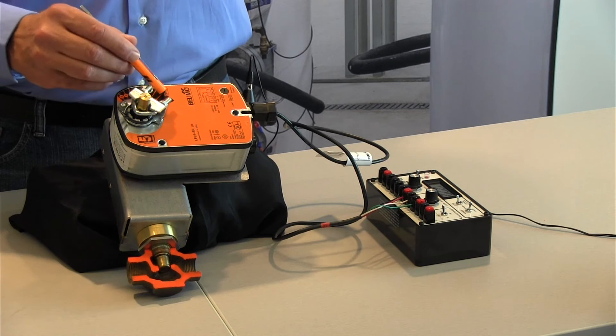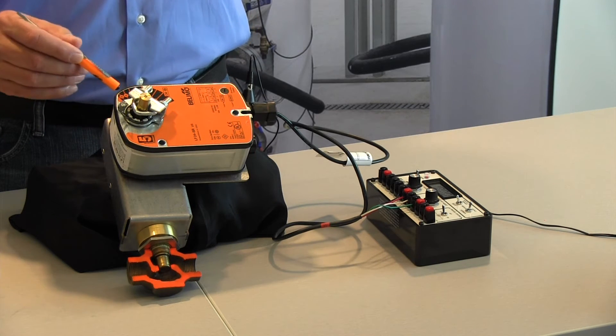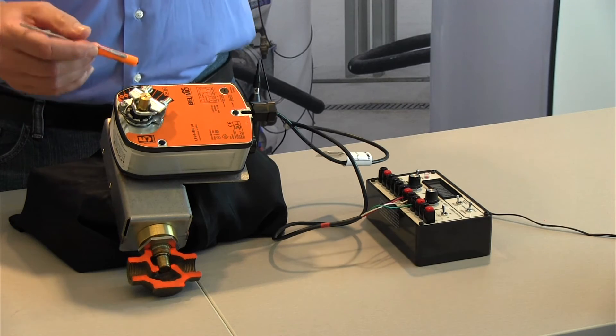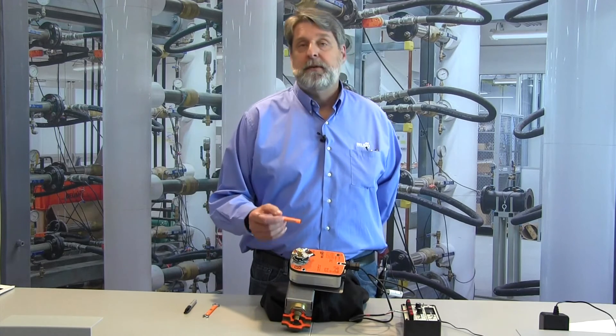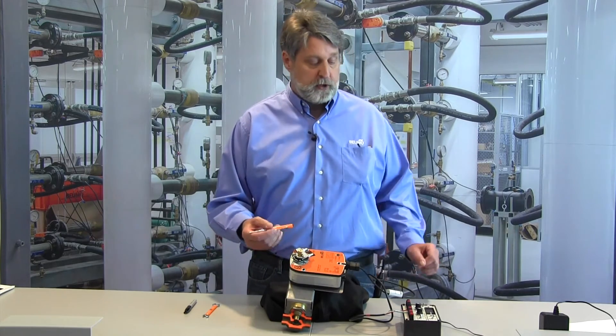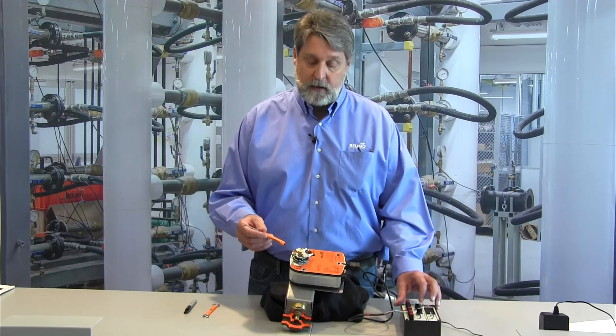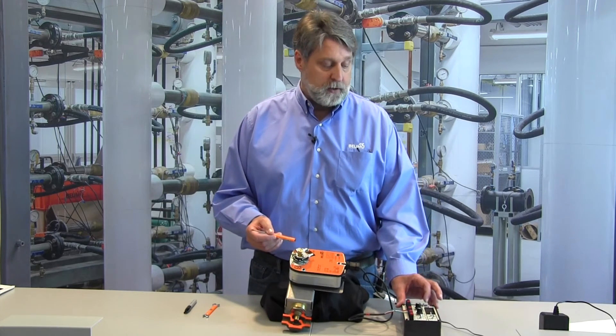We have a scale on the outside of the actuator and it's just for general reference. Because this is a spring return actuator and I've got it set up to fail in the fail close position, when I remove power the spring is going to drive the actuator closed.